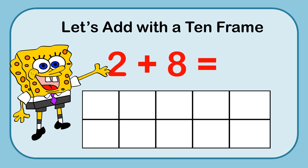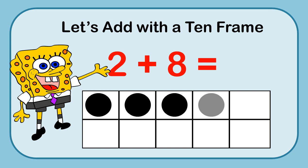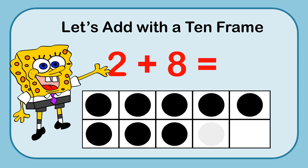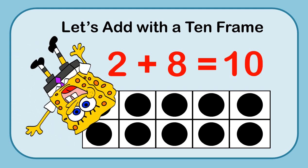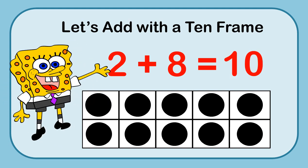Now we're going to look at 2 plus 8. My 2 markers and then 8 more: 1, 2, 3, 4, 5, 6, 7, 8. You should know this answer just by looking at the 10-frame — the whole 10-frame holds 10 markers. If you didn't know, you could count them all up, or say there's 5 on the top and count up: 5, 6, 7, 8, 9, 10.